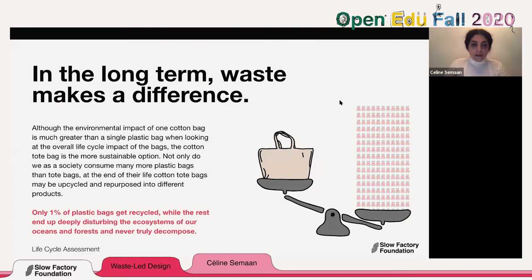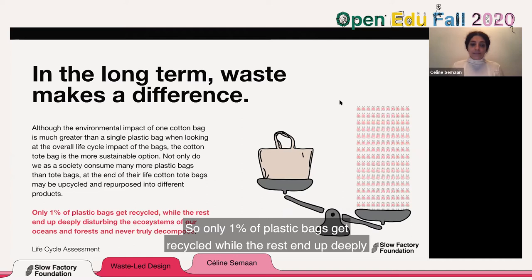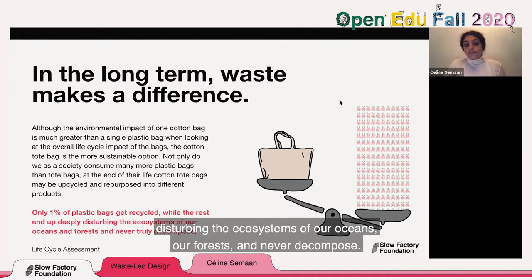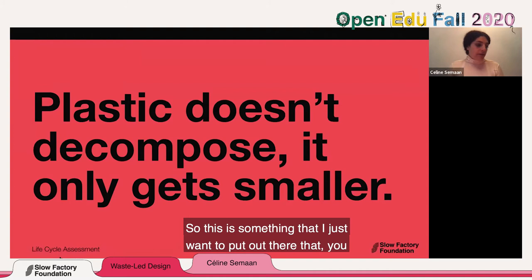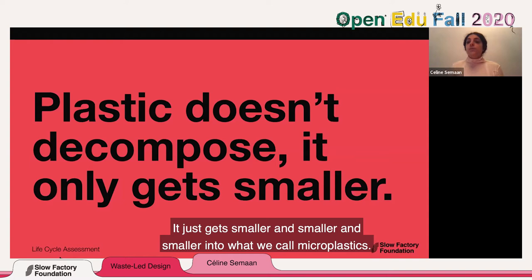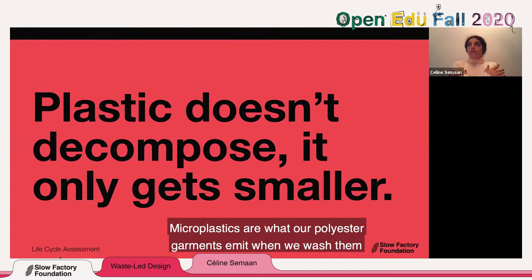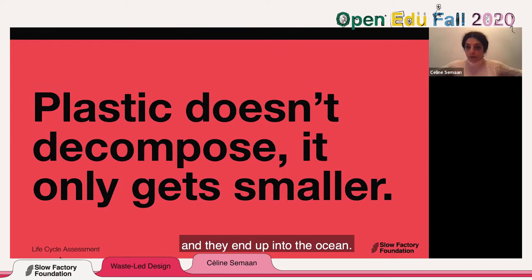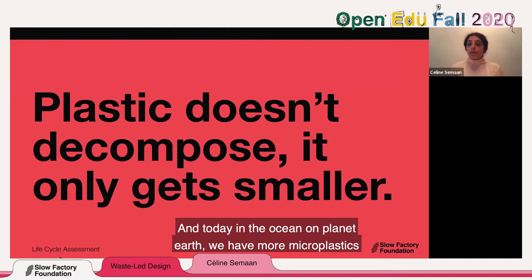Only 1% of plastic bags get recycled, while the rest end up deeply disturbing the ecosystems of our oceans and forests, and never decompose. Plastic does not decompose — it just gets smaller and smaller into what we call microplastics. Microplastics are what our polyester garments emit when we wash them, and they end up in the ocean. Today, on planet Earth, we have more microplastics than we have stars in our galaxy.